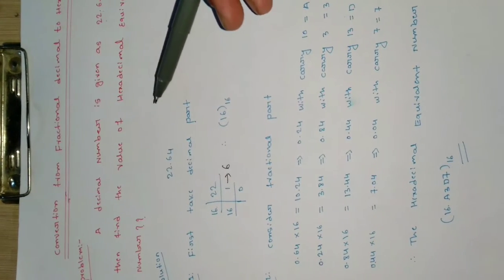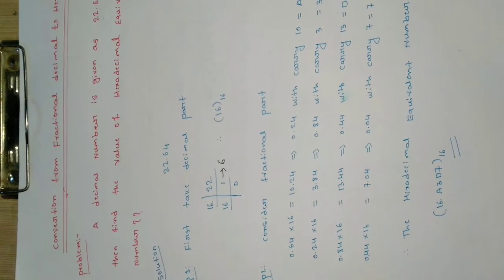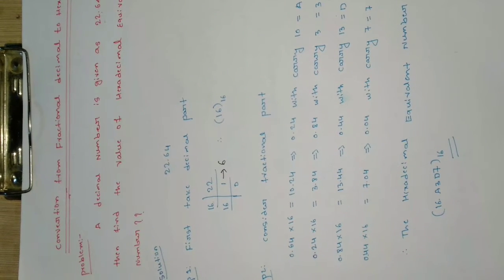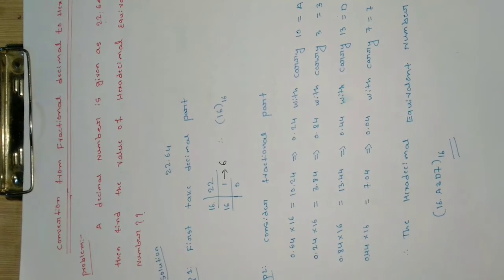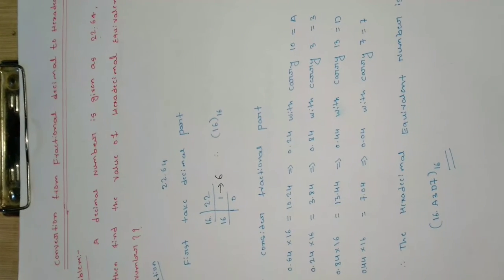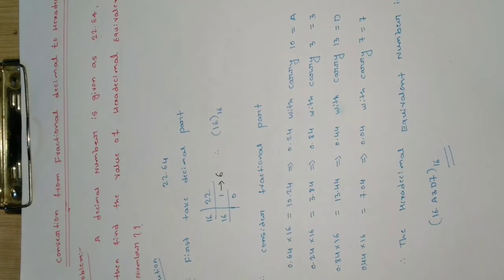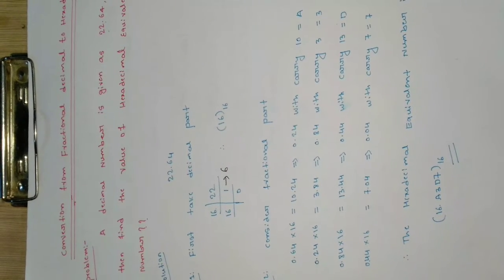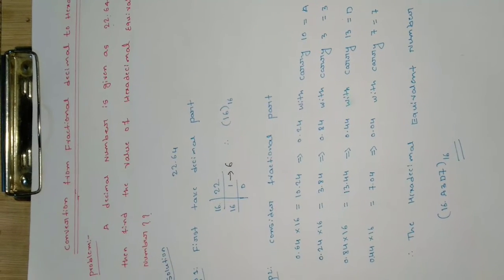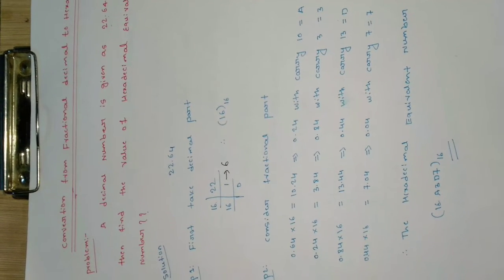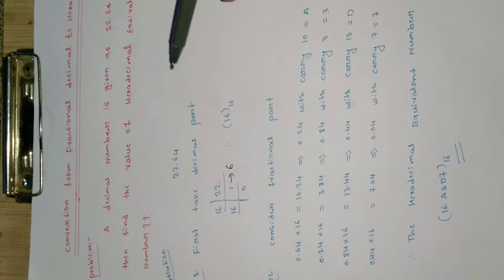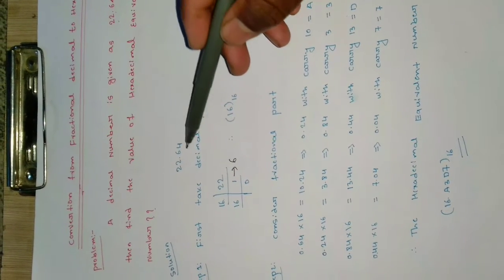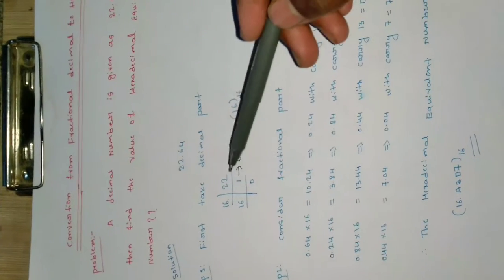Step one consists of solving the part on the left of the decimal point, that is 22. In step two we will solve the part on the right of the decimal point, that is 0.64. So first, take the integer part — that is 22.